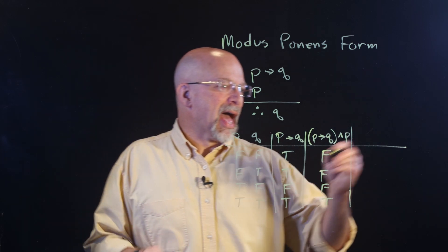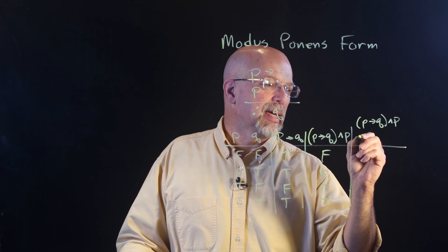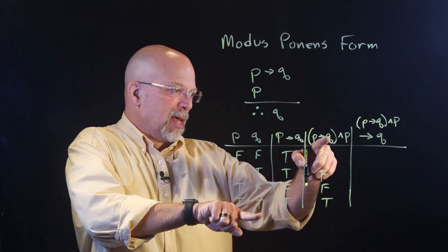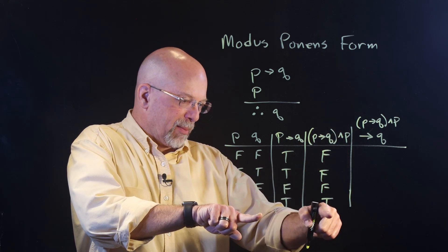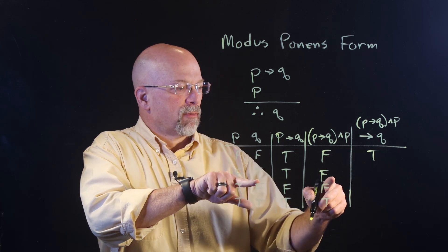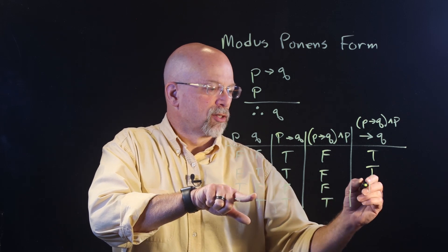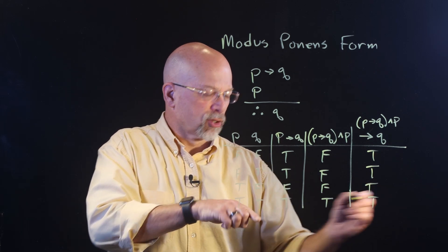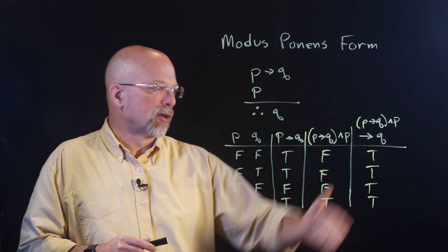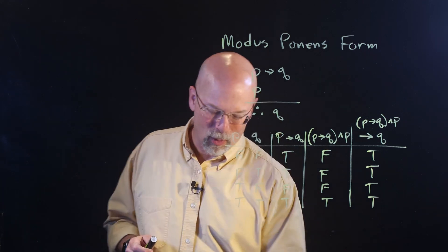The idea that (P implies Q) and P implies Q: we take that column and have it imply the Q column. False implies false — true. False implies true — true. False implies false — true. True implies true — true. In other words, we have no place where true implied false. So we've got proof that the modus ponens form works.